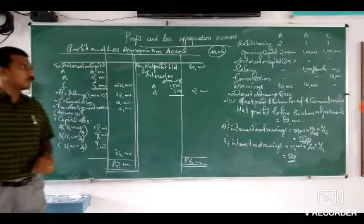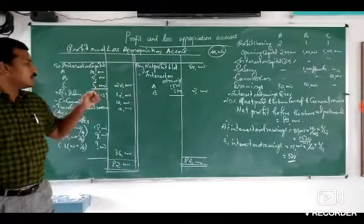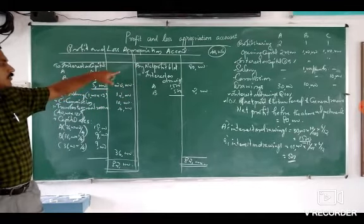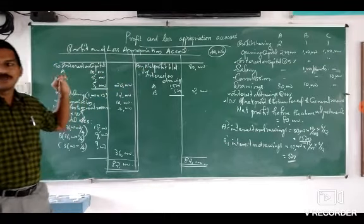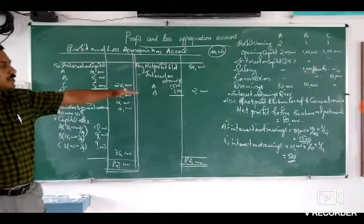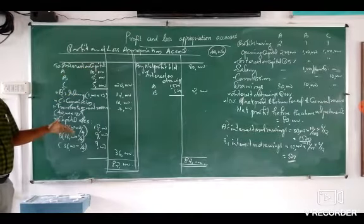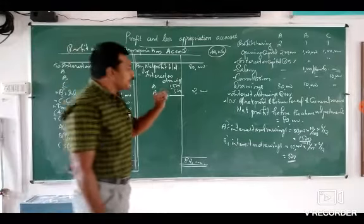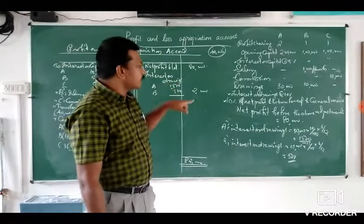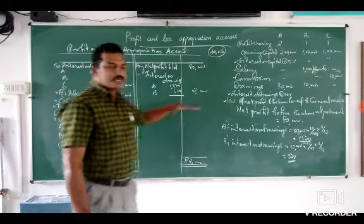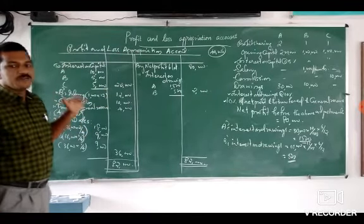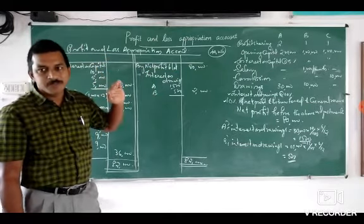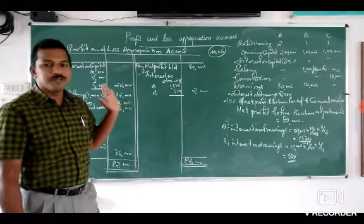That is regarding the basic preparation of the Profit and Loss Appropriation Account. Now there is one more adjustment to discuss. They are saying that after making all these adjustments, half of the remaining profit will be divided equally among A, B and C, and the remaining half will be shared in their profit sharing ratio of 2:1:1. So half of the profit divided equally, and the other half in their profit sharing ratio.